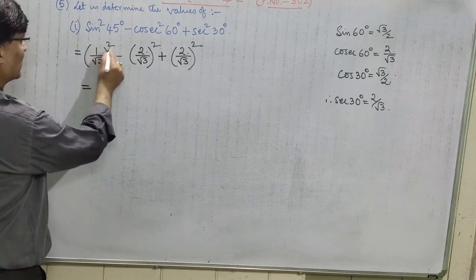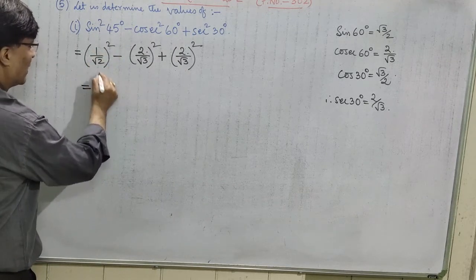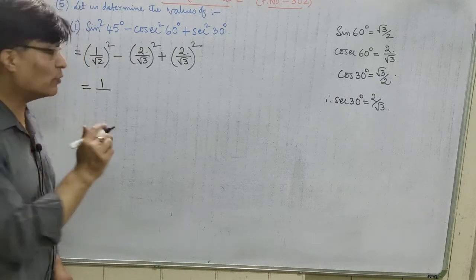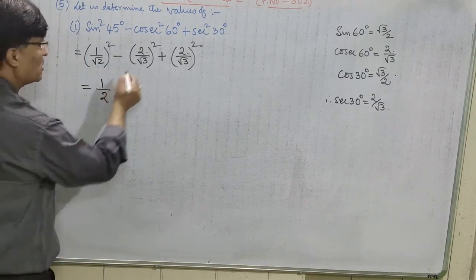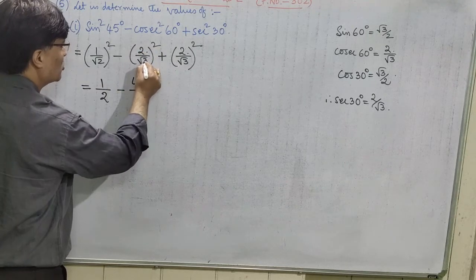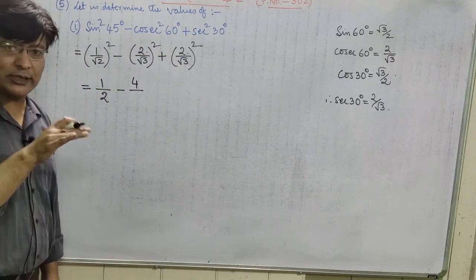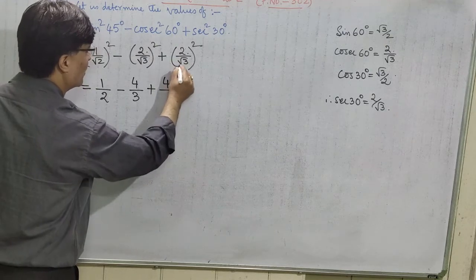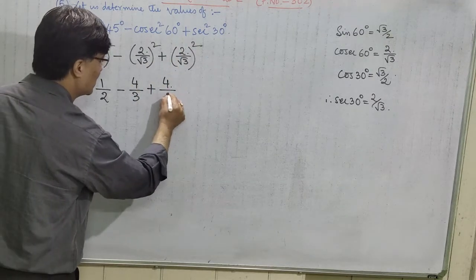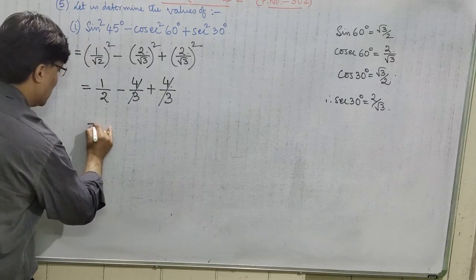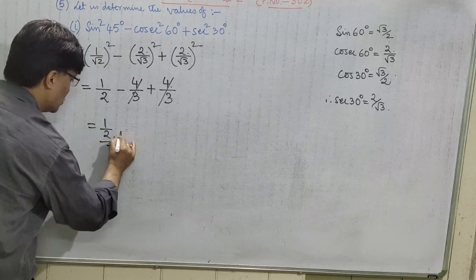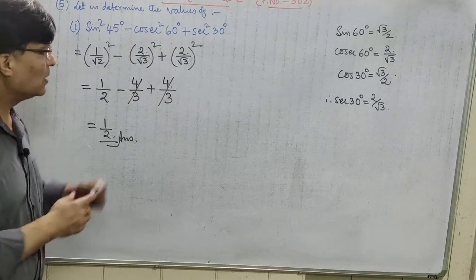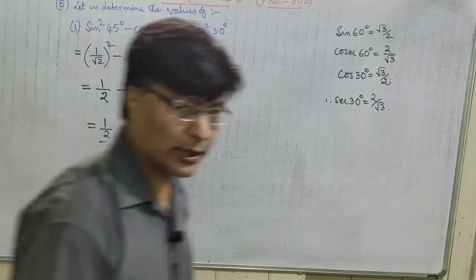So the expression becomes: (1/√2)² minus (2/√3)² plus (2/√3)². That is 1/2 minus 4/3 plus 4/3. The minus 4/3 and plus 4/3 cancel each other, which gives the final answer equal to 1/2.